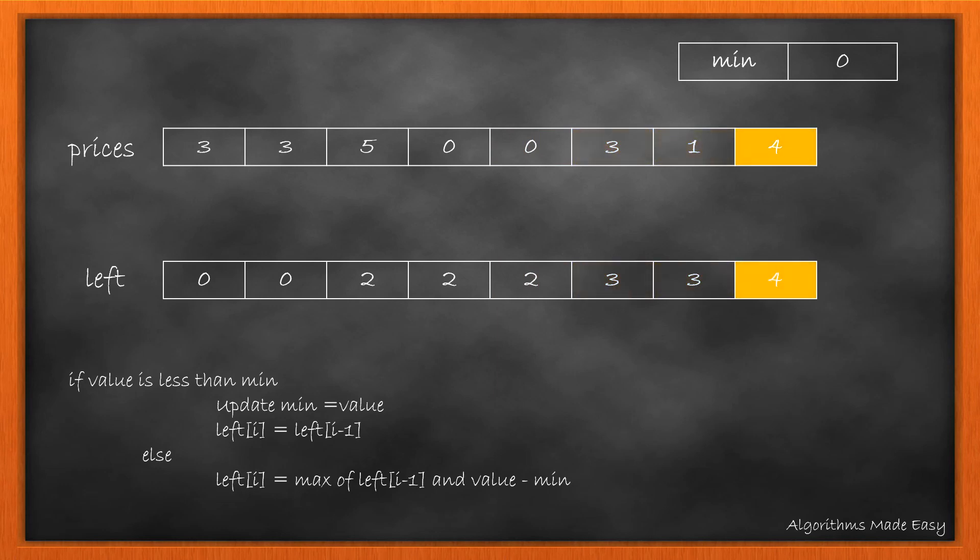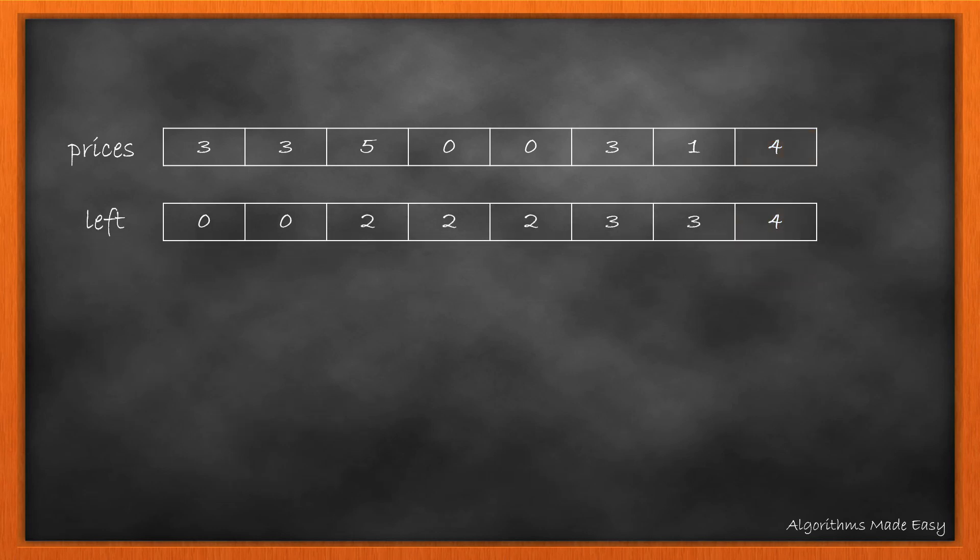We will finally get this array. This array signifies the maximum profit when only one transaction is allowed. Now we need to find if there exists another transaction.